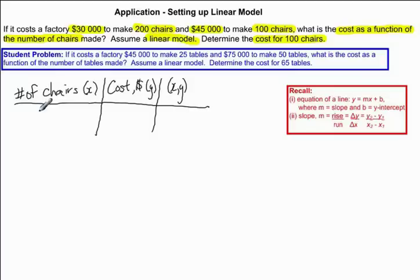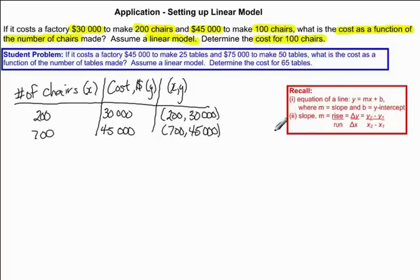So I'm going to start with, we have 200 chairs and the cost is $30,000. So my ordered pair is 200, 30,000. The next is 700 chairs and we have $45,000. So my ordered pair is 700, 45,000. Okay, so this just helps visualize the linear model we're going to use. We have our x values and our y values.